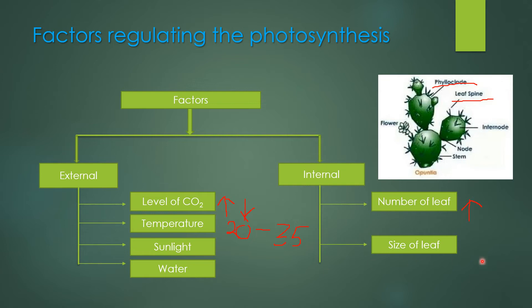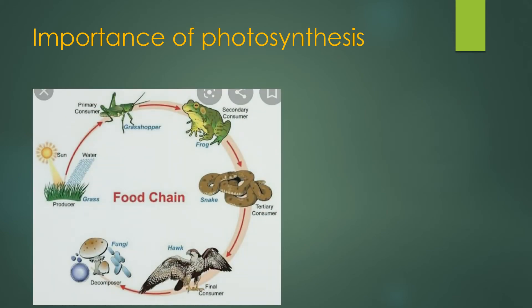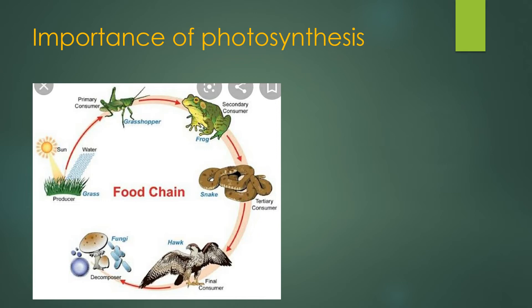Now let's talk about the importance of photosynthesis. See this flowchart — it shows a food chain. Here the green plant acts as the producer. As they are autotrophic and possess autotrophic nutrition, they can prepare their own food by the process of photosynthesis, and thus they are known as producers. Here grasshopper, frog, snake, and hawk are all consumers.